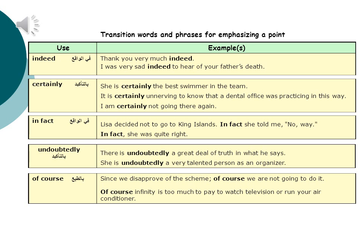The next transition is 'undoubtedly', which is used to emphasize that something exists or is definitely true. Examples: There is undoubtedly a great deal of truth in what he says. She is undoubtedly a very talented person as an organizer.